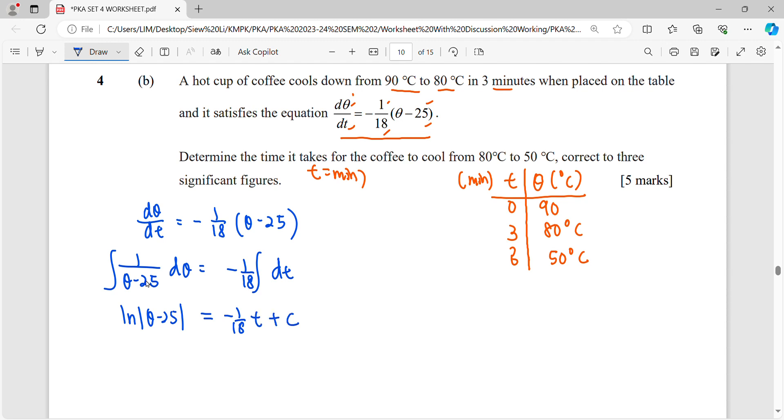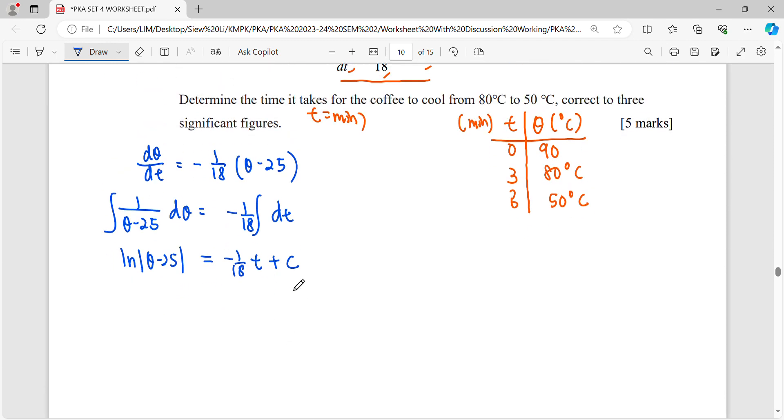Integrate respect to t plus c. Then simplify this equation up to general form before we find the particular solution. So unlock the equation. Theta, we're going to power of negative 1 over 18 t plus c.